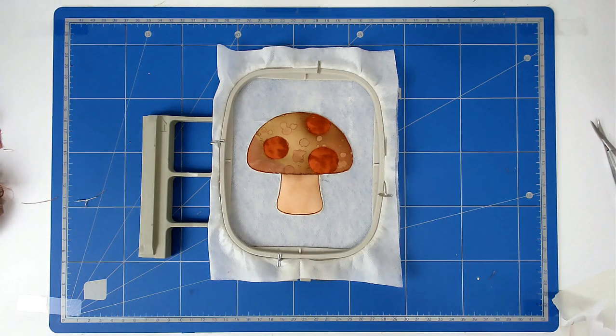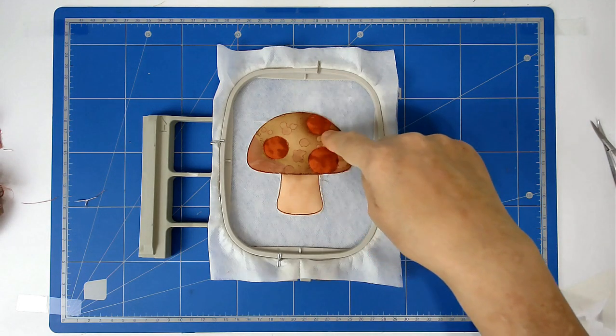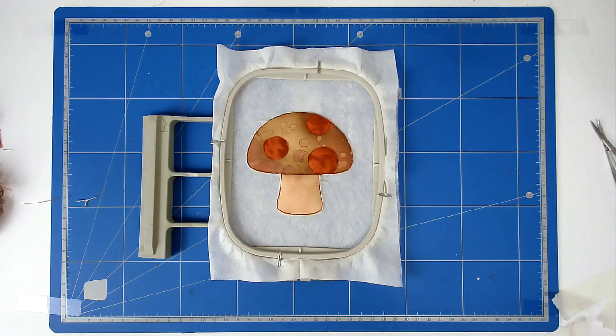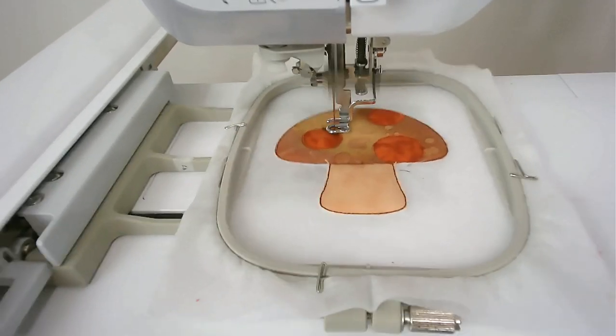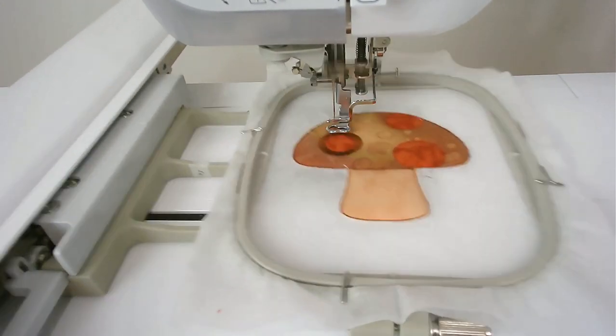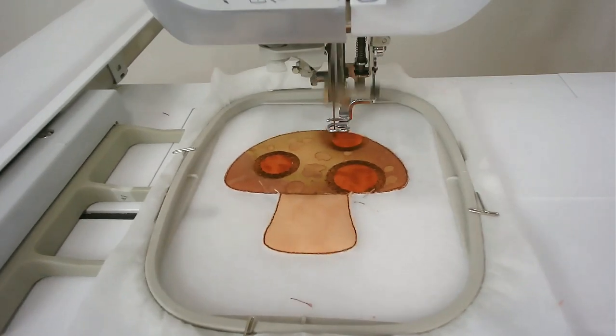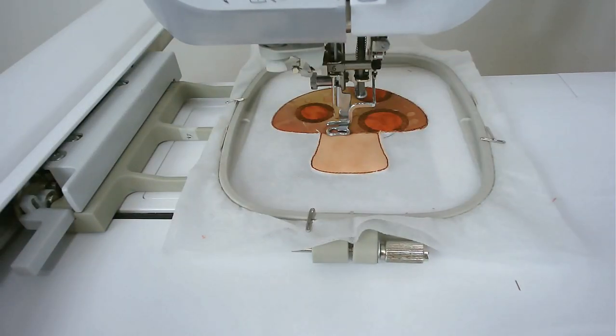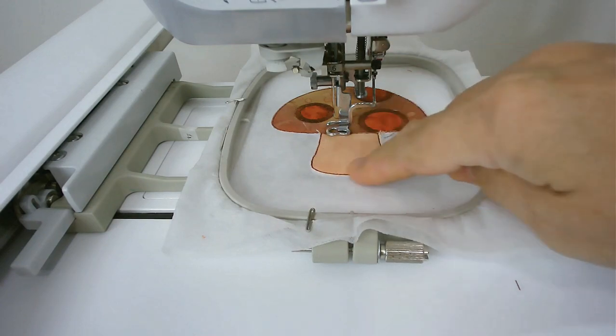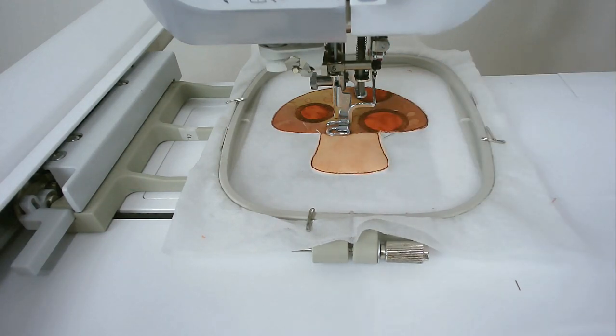Load your matching bobbin and thread for the spots into your machine and then you're going to stitch round number six. Load your matching bobbin and thread for the satin stitching around the edge of the foot, and then you're going to stitch round number seven.